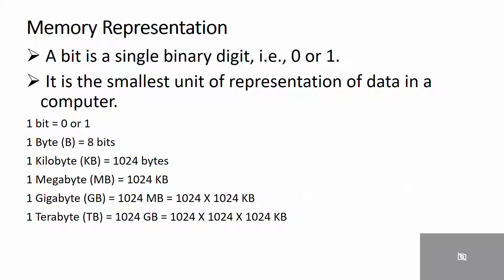However, data is handled by the computer as a combination of bits. A group of 8 bits forms a byte. 1 byte (B) equals 8 bits. 1024 bytes make 1 kilobyte (KB). 1024 kilobytes make 1 megabyte (MB). 1024 megabytes make 1 gigabyte (GB), and 1024 GB make 1 terabyte (TB).